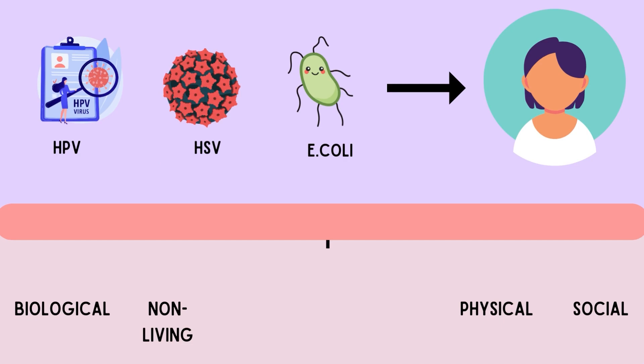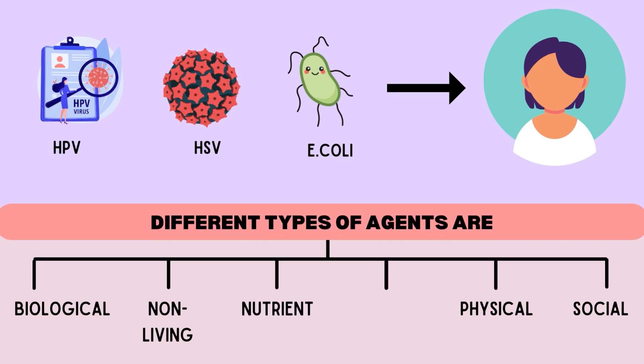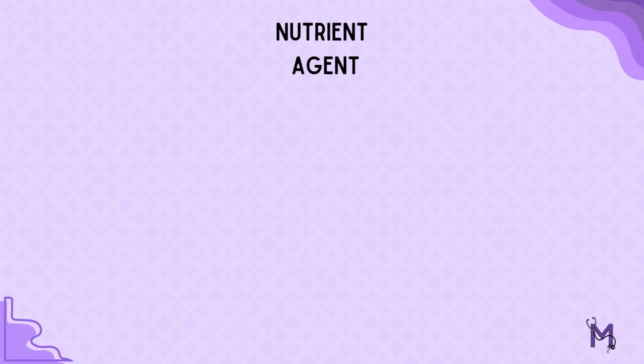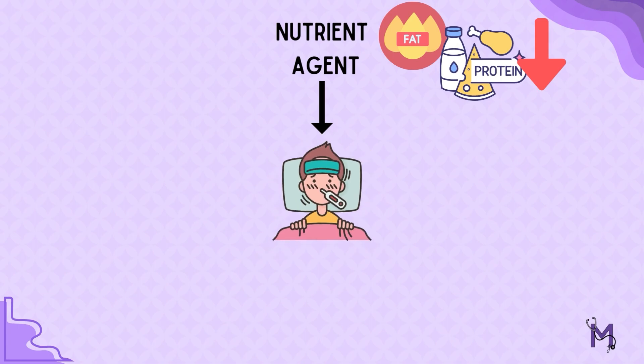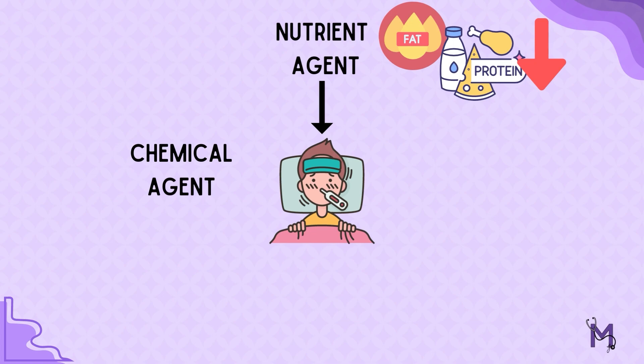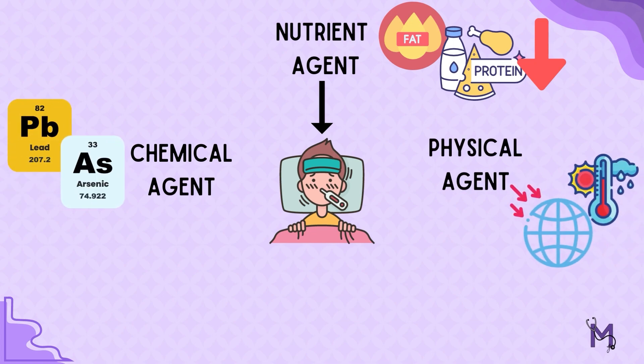However, there can be other causes like nutrient deficiencies. Nutritional deficiencies like that of proteins and fats could also lead to diseases, thus accounting for nutrient agents. Chemical agents like lead and arsenic, along with physical agents like temperature and atmospheric pressure, are also examples. Lastly, there are certain social agents like poverty and smoking which can also lead to disorders.